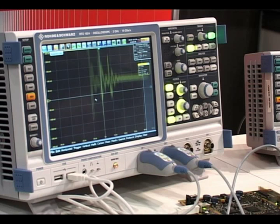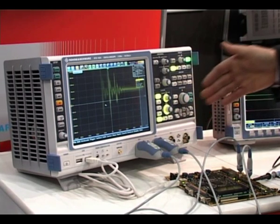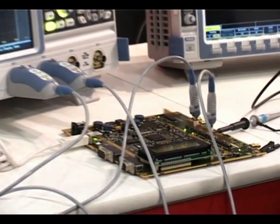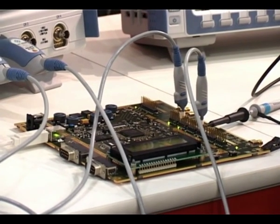The particular model we have here is a 10 gigasample, 4 channel, 2 gigahertz bandwidth instrument with active probes clicked on the front and we've got it connected up to a board that at the moment is generating some very infrequent errors, eight of them per second at the moment.